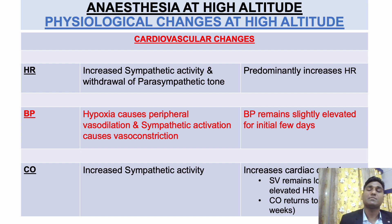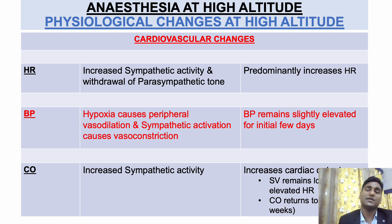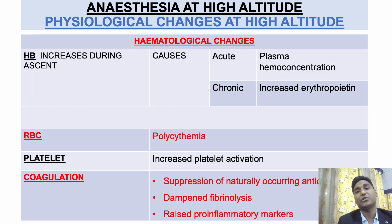Heart rate increases at higher altitude mainly due to increased sympathetic activity, increased circulating catecholamines, and parasympathetic withdrawal. There is peripheral vasodilation due to hypoxia, but sympathetic overactivity also causes vasoconstriction. In normal patients who ascend to higher altitudes, blood pressure remains on the higher side due to resetting of central sympathetic outflow. Cardiac output increases as heart rate increases but resets to normal cardiac output after a few weeks of acclimatization.